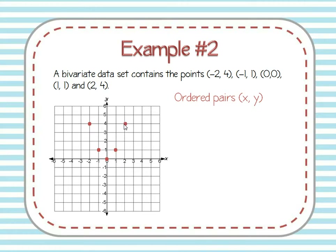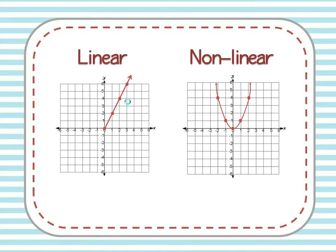When X is positive 1, Y is positive 1, so there's my next point. When X is 2, Y is 4 — I plot a point there. If I connect all of these dots, I get a curve — we actually call this a parabola. For now, all you need to know is that it is not a straight line. This is not a linear relationship — we would call it nonlinear. If it doesn't create a straight line, it is nonlinear.